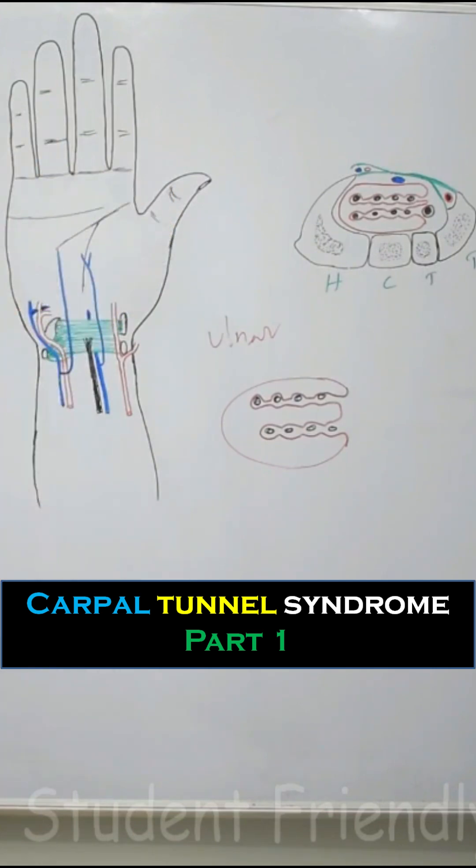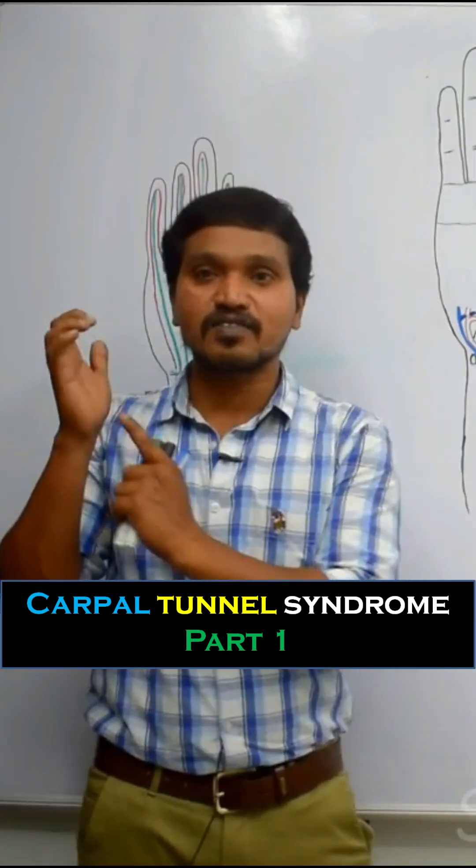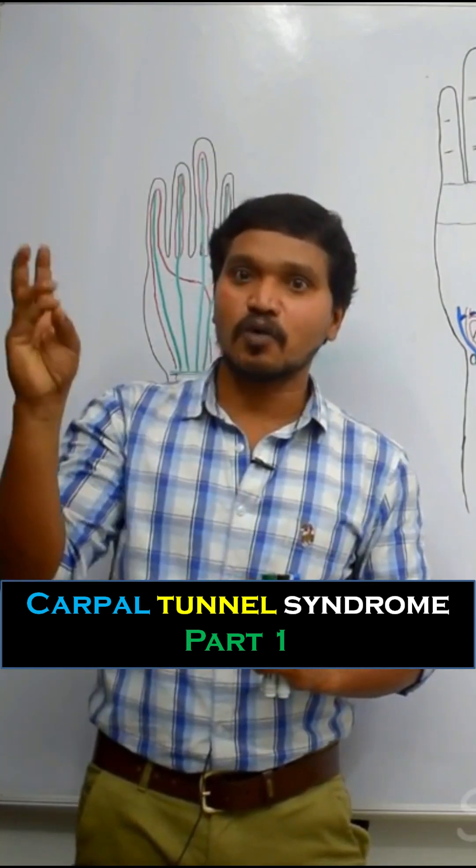Then what are motor symptoms? See, median nerve is supplying to the thenar muscles. If there is injury to the median nerve which leads to weakness and wasting of thenar muscles along with loss of opposition. That is, we cannot do opposition.